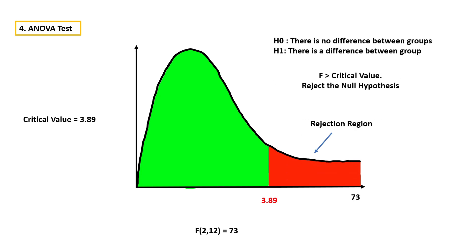As a rule of thumb, if the F-score is greater than the critical value, we can straight away reject the null hypothesis. Here, the null hypothesis is there is no difference between groups, and the alternative hypothesis is there is a difference between groups. In this case, the F-score is greater than the critical value, so we can reject the null hypothesis and conclude that there is a significant difference between groups — this feature is important. If you are interested in the p-value, which is the total area to the right of this point, obviously there is nothing after 73, so the probability value is 0.